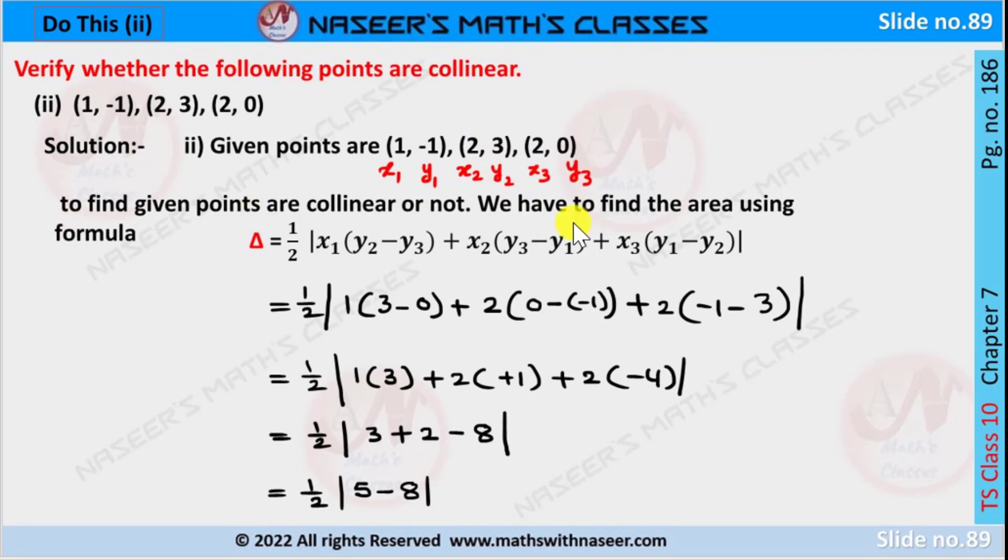To find if the given points are collinear or not, we have to find the area using the formula: Δ = ½|x₁(y₂-y₃) + x₂(y₃-y₁) + x₃(y₁-y₂)|.